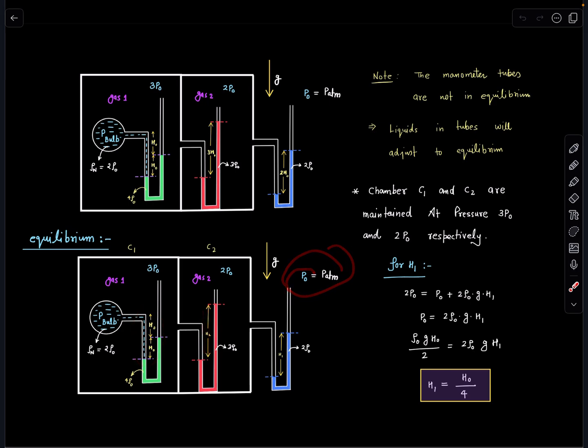We will talk about this later on. So from here I can see p naught plus 2 rho naught g h1, that is going to be the pressure in this part which is 2p naught. So I can write it as 2p naught equals p naught plus 2 rho naught g h1.